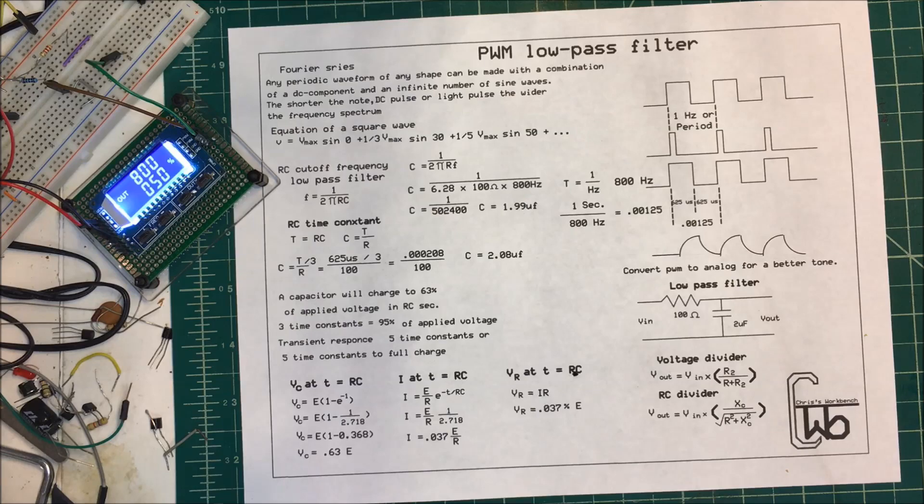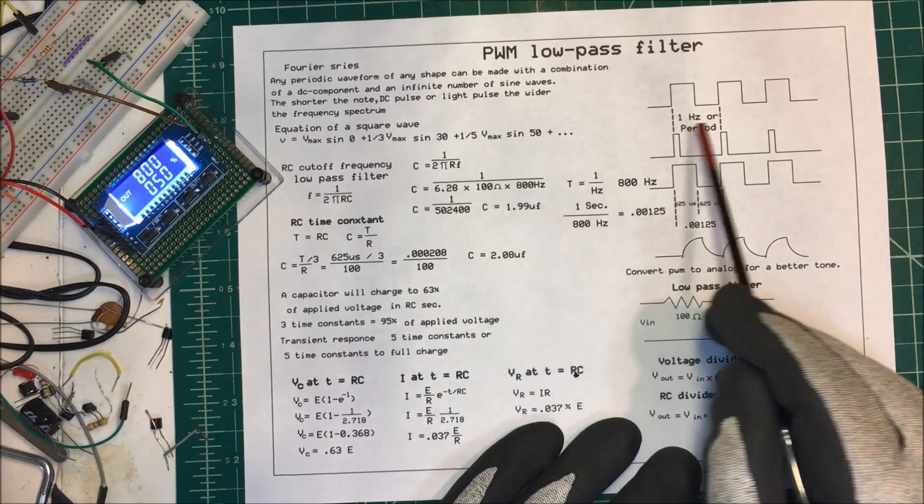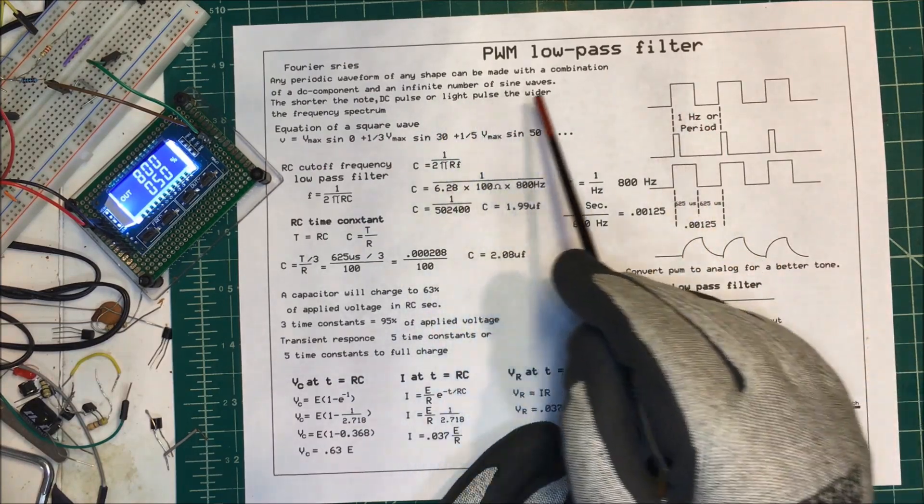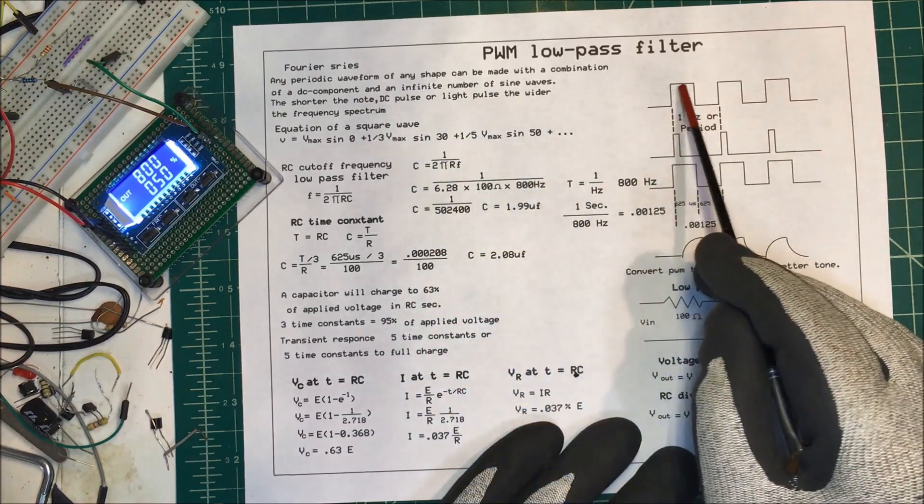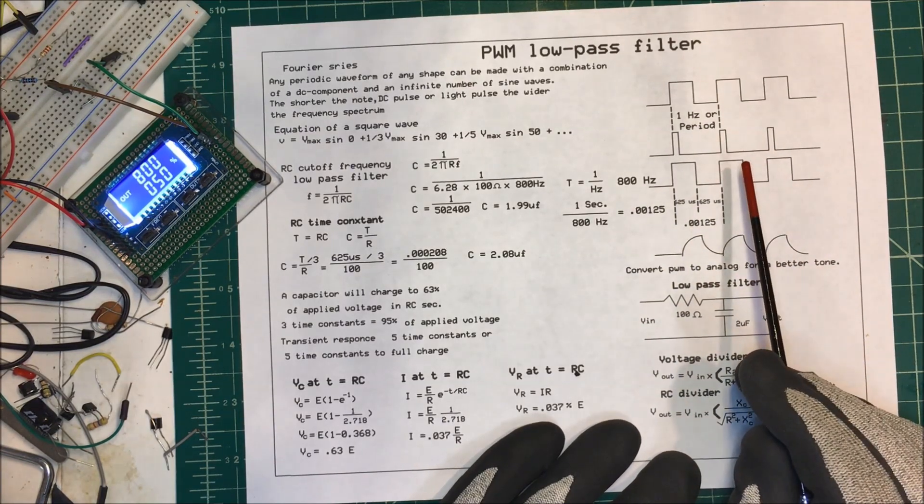That's kind of hard to wrap your head around - the fact that just by creating a light pulse or DC pulse, we're creating these frequencies. But that's what physicists tell us happens.